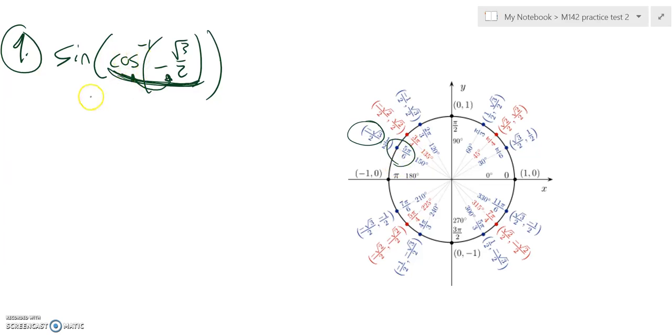So that's 5 pi over 6. So now I want sine of 5 pi over 6, and the sine is the height of it, so the answer is 1 half.